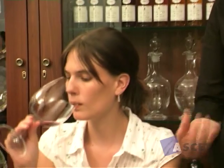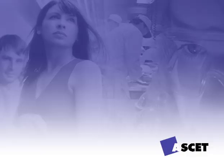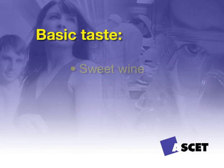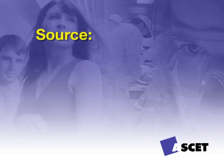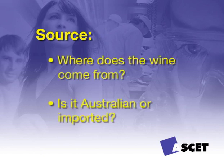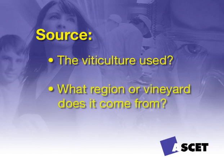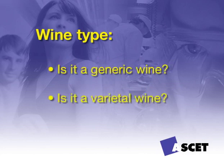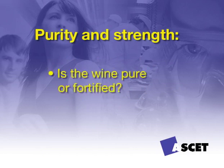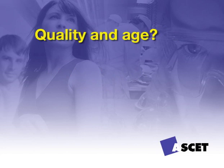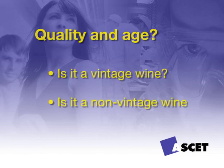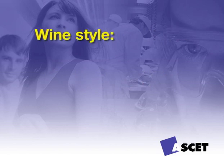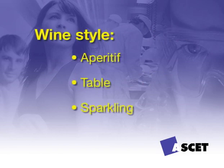When describing wine to a customer, there are many different terms you should be familiar with. These include: colour — is the wine red, rosé or white? Basic taste — is it sweet or dry? Source — where does it come from, Australian or imported? Viticulture — what region or vineyard? Wine type — is it a generic or varietal wine? Purity and strength — pure or fortified? Quality and age — vintage or non-vintage? Production methods — what techniques were used? And finally, what style: aperitif, table, sparkling, or dessert?